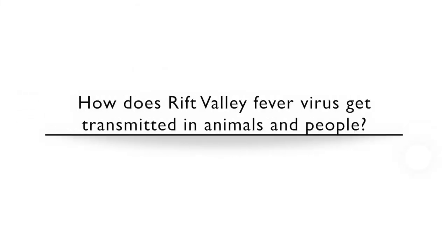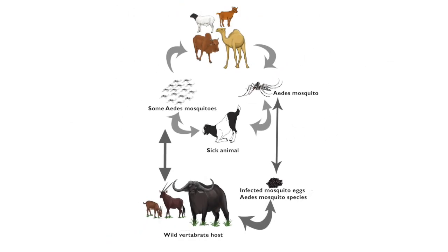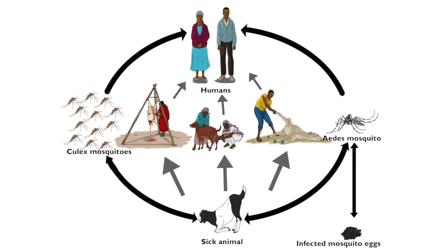How does Rift Valley Fever virus get transmitted in animals and people? Mosquitoes can transmit Rift Valley Fever to susceptible wildlife, domestic animals, and humans as they feed. An outbreak occurs when many animals have been infected and can show clinical signs. This requires large populations of mosquitoes and biting flies to enhance mosquito-host contacts, and hence the chances of virus transmission.